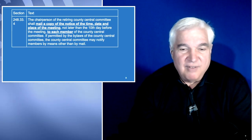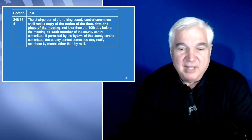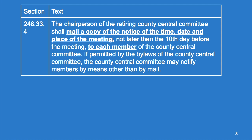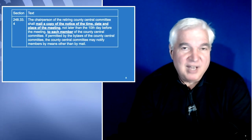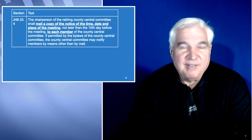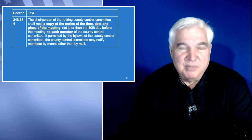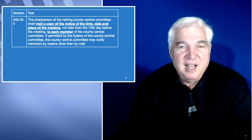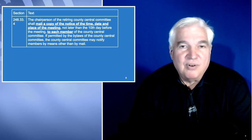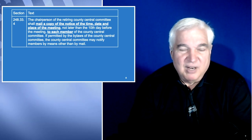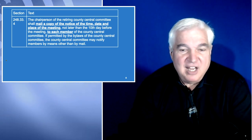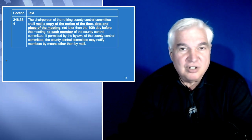Section 248.33.4: the chairperson of the retiring county central committee shall mail a copy of the notice of the time, date, and place of the meeting no later than the 10th day before the meeting to each member of the county central committee. If permitted by the bylaws, the county may notify members by means other than mail. If you have valid email addresses for all of your members, you could get by without mailing them. But for large counties like Multnomah County, with something like 950 elected precinct committee persons, the cost of mailing notices could be well over $400. This is a requirement that every member must be notified 10 days before the meeting; otherwise your election could be challenged and invalidated.